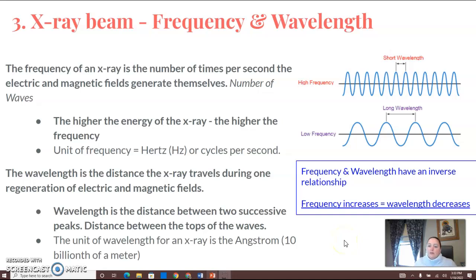All right, back for number three, we're going to do frequency and wavelength. The frequency of an x-ray is the number of times per second the electric and magnetic fields generate themselves, so number of waves.